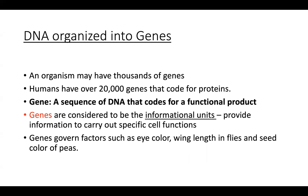Genes are informational units that provide information to carry out specific cell functions, alluding to the production of proteins. Humans have over 20,000 genes in our bodies that code for proteins. It is these proteins that give our cells their various functions. Any organism can have thousands of genes, all coding for various protein products.